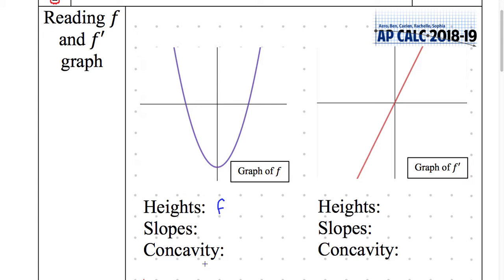This is going to be slopes. What is slopes going to be? It's going to be F prime. And concavity? F double prime. F prime prime.